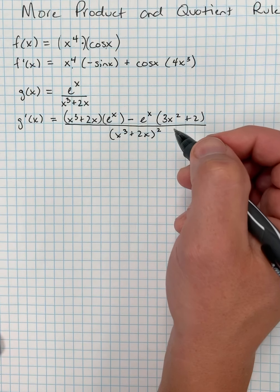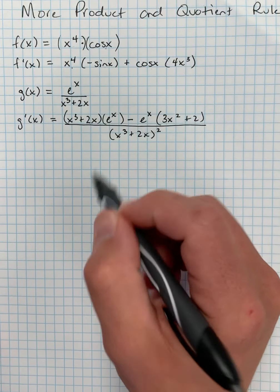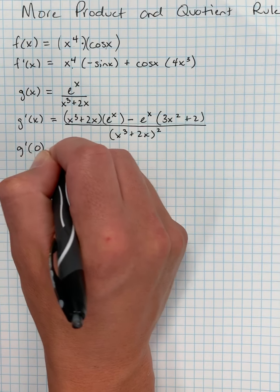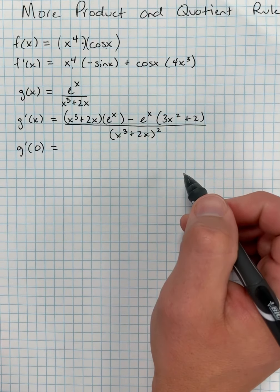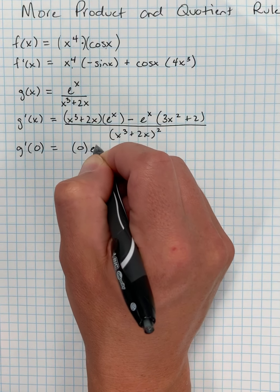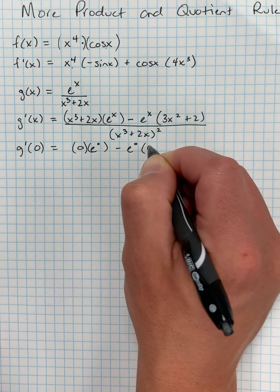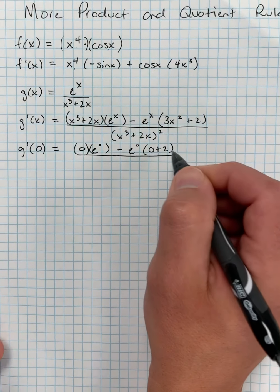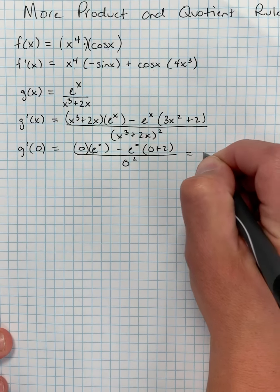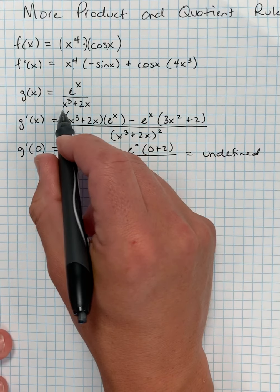And again, if I don't have to, I'm not going to simplify just yet. I may have to match something up here with a multiple choice example or use this for something. Maybe I need to find g'(0), in which case I would need to plug 0s in along the way. Real quick, we can do that. I end up with 0 times e to the 0 minus e to the 0 times 0 plus 2 over, and this is going to be trouble, over 0 squared.